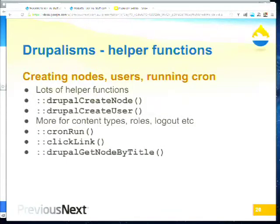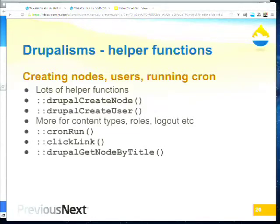There are a lot of helper functions. In the TrackerTest earlier you saw drupalCreateContentType(). Rather than enabling a module, navigating to add content type, and submitting the form, you can just use drupalCreateNode(), drupalCreateUser(), drupalCreateContentType(). There's also cronRun(), clickLink(), and drupalGetNodeByTitle() — which I probably should have used in that test instead of node_load(1).